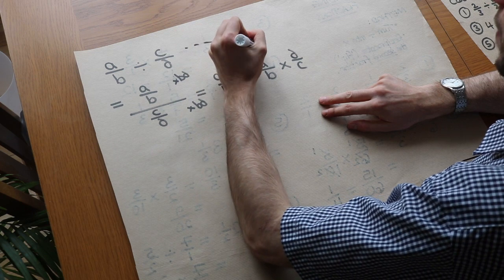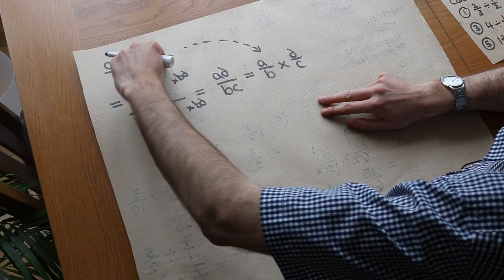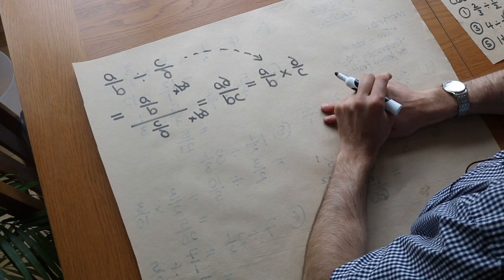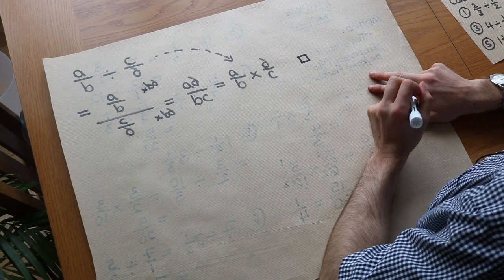So you can see therefore that's a proof that we can turn the divide into a times and we can flip the second fraction. And I can put a little box at the end to say my proof is complete.